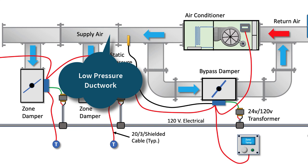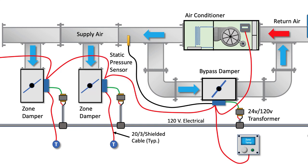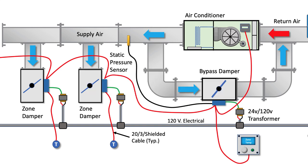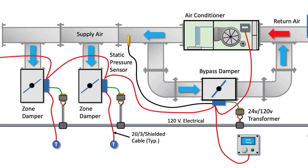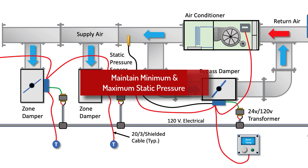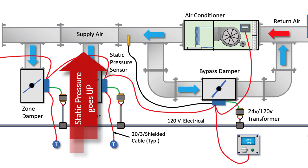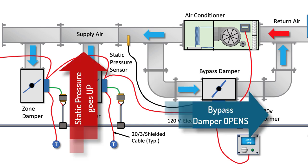The bypass damper also allows the ductwork to be installed using low-pressure duct, as the bypass damper prevents buildup of static pressure in the ductwork. Excessive static pressure could cause the joints or seams of the duct to come apart, creating leaks. The bypass controller uses a duct static pressure sensor installed in the supply air ductwork. The controller is set by the user to maintain a minimum and maximum pressure in the supply duct main, and as static pressure increases due to zone dampers closing, the sensor modulates the bypass damper to route the excess air.